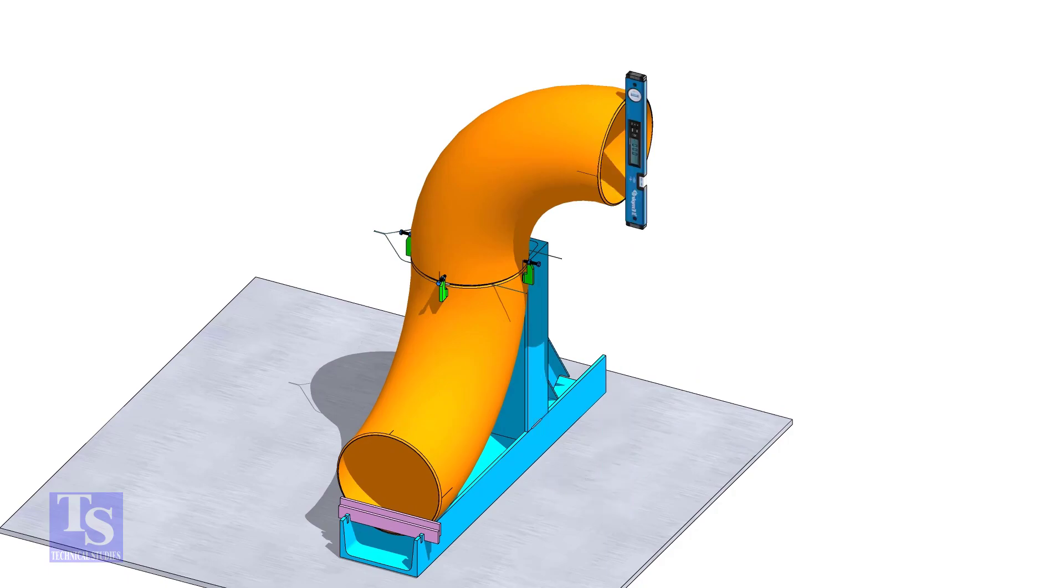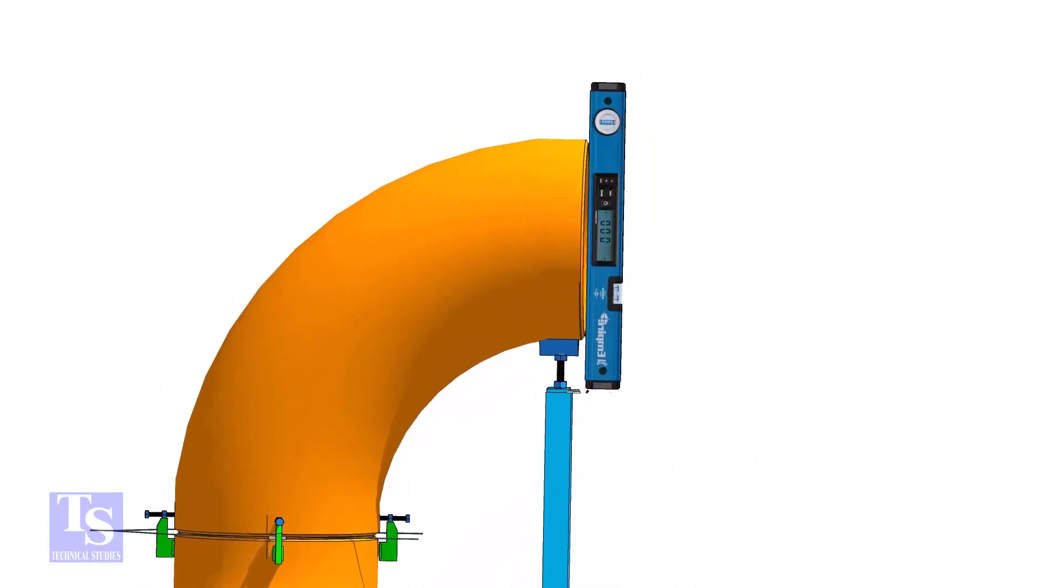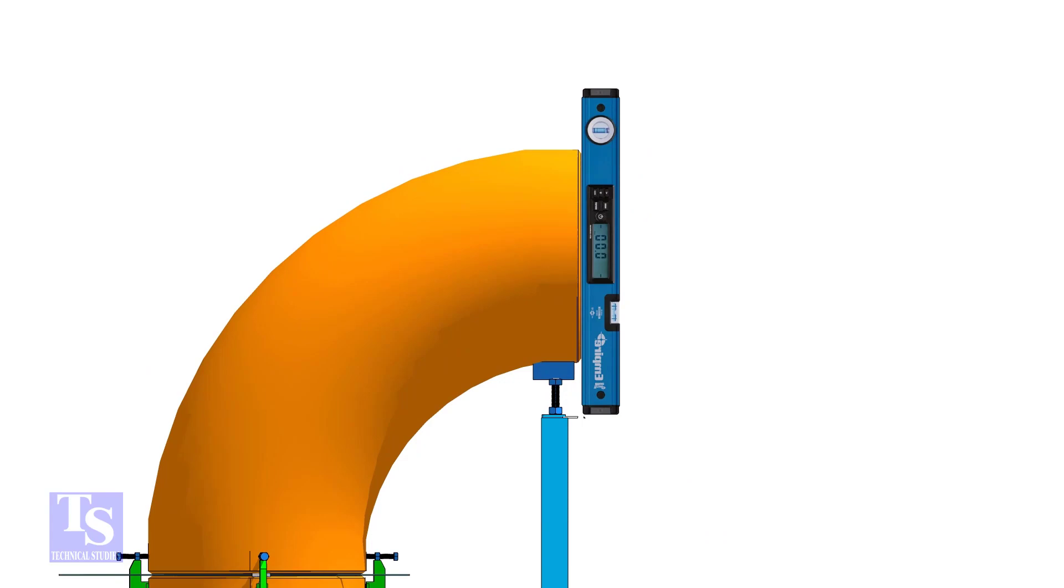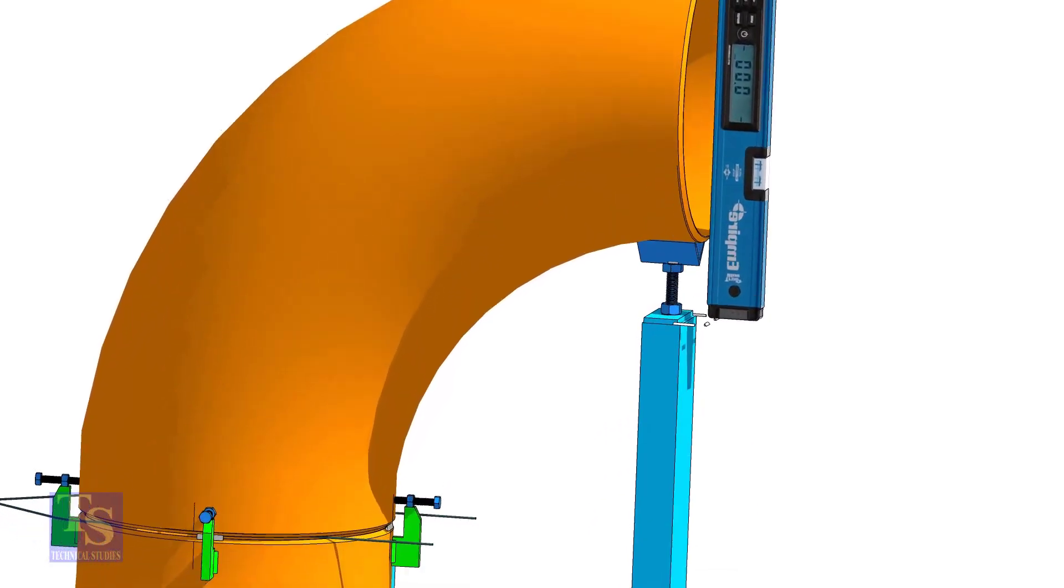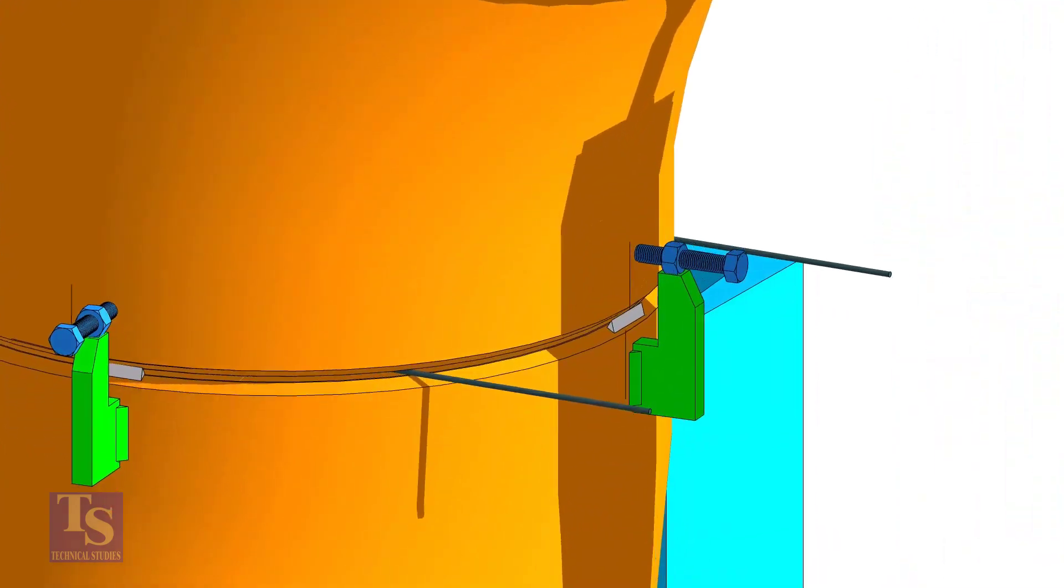Check the verticality of the elbow face. Tack weld on this side and the back side of the elbow.